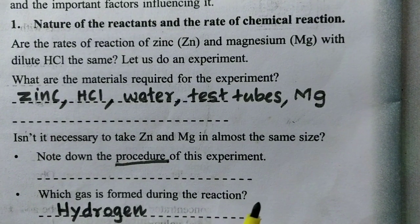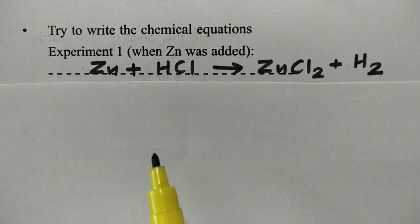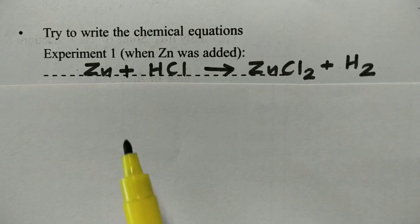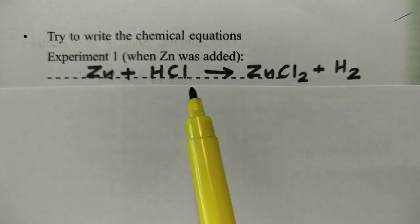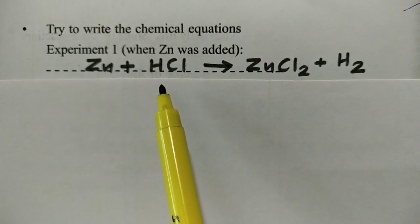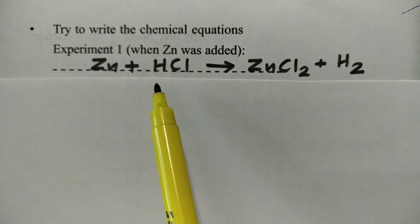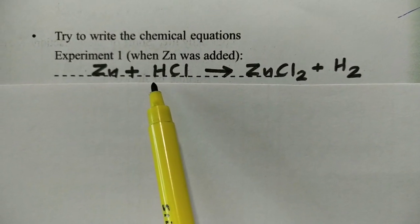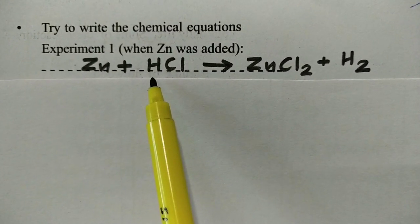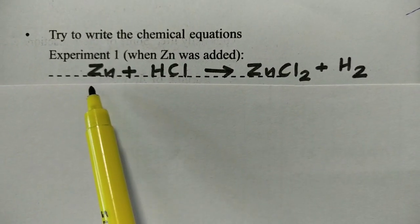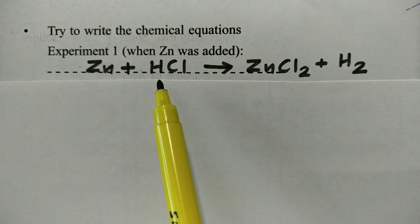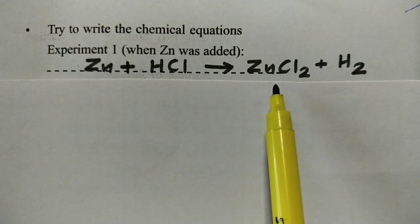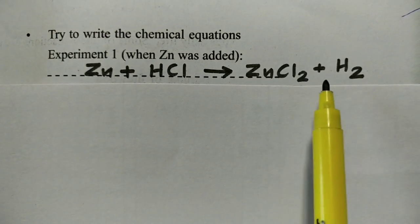Hydrogen gas is produced. We can write a chemical equation for the experiment. The equation is: Zn + HCl → ZnCl₂ + H₂. We are learning how to balance it.